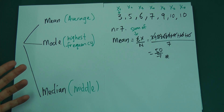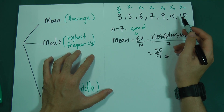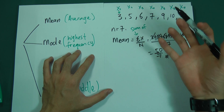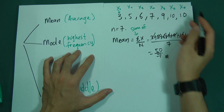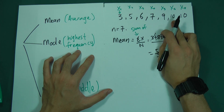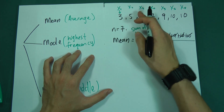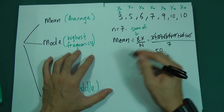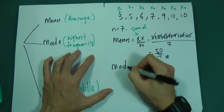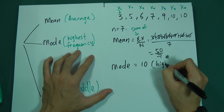The mode is the highest frequency value — the number that comes out the most times. Looking at our data, every number appears only once except 10, which appears twice. So the mode is 10 because it has the highest frequency.